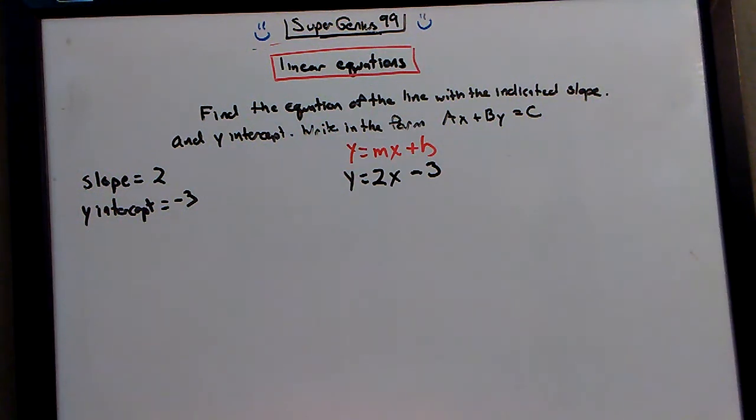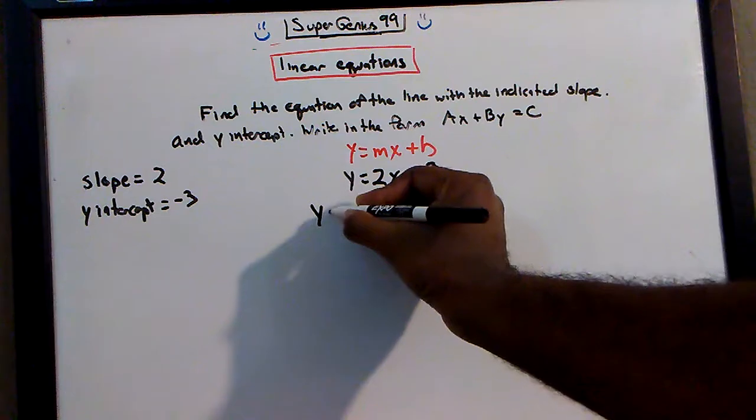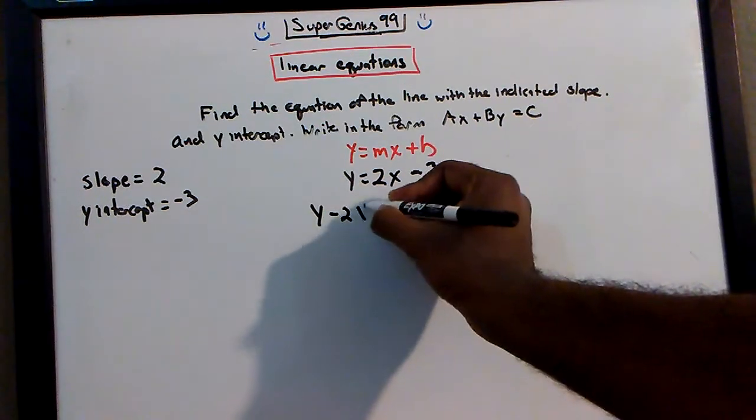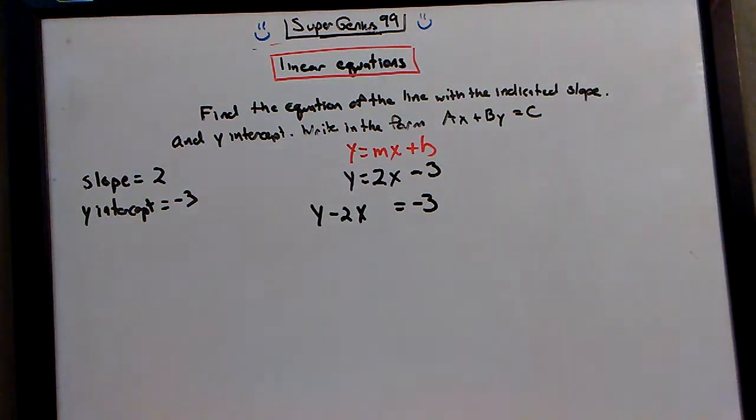So in this case, all we have to do is subtract 2x from both sides. You subtract 2x from both sides, and you get what? y minus 2x is equal to negative 3. Now we have it in this form.